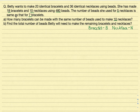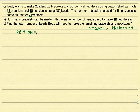Now, 18 bracelets and 10 necklaces use 480 beads. How do I write this information in the form of an equation? I can write it like this: 18B plus 10N equals 480. It means that in order to make 18 identical bracelets and 10 identical necklaces, Betty has already used 480 beads. That's our Equation 1.